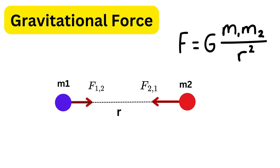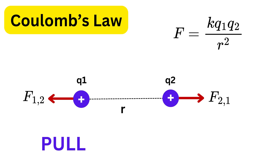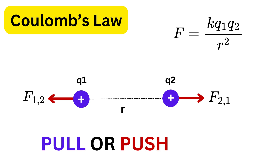r is the distance between the objects. Now, gravity only knows how to pull since it is an attractive force only, but Coulomb's Law can do both — pull or push — depending on the type of charge.